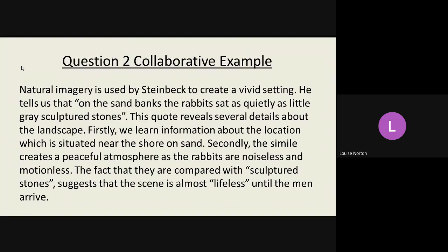And an example of a question. Natural imagery is used by Steinbeck to create a vivid setting. He tells us that on the sand banks, the rabbit sat as quietly little grey sculptured stones. This quote reveals several details about the landscape. Firstly, we learn information about the location, which is situated near the shore on sand. Secondly, the simile creates a peaceful atmosphere as the rabbits are noiseless and motionless. The fact that they are compared with sculptured stones suggests that the scene is almost lifeless and the man arrive.